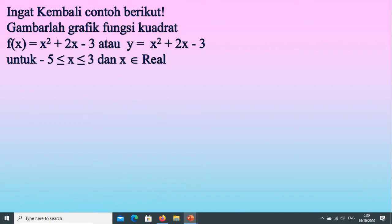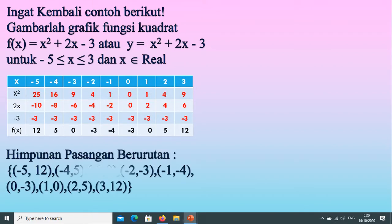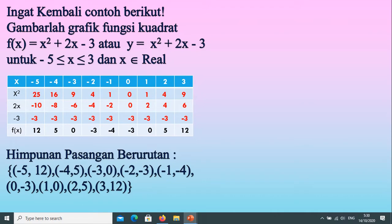Kita ingat kembali contoh yang sudah kita bahas sebelumnya. Ya kita punya fungsi kuadrat f(x) sama dengan x kuadrat tambah 2x kurangi 3 atau y sama dengan x kuadrat tambah 2x kurangi 3, dengan nilai x pada terletak antara negatif 5 dan 3.